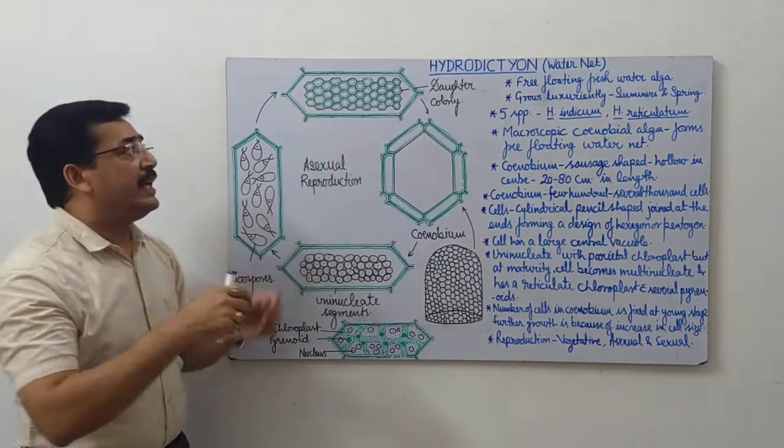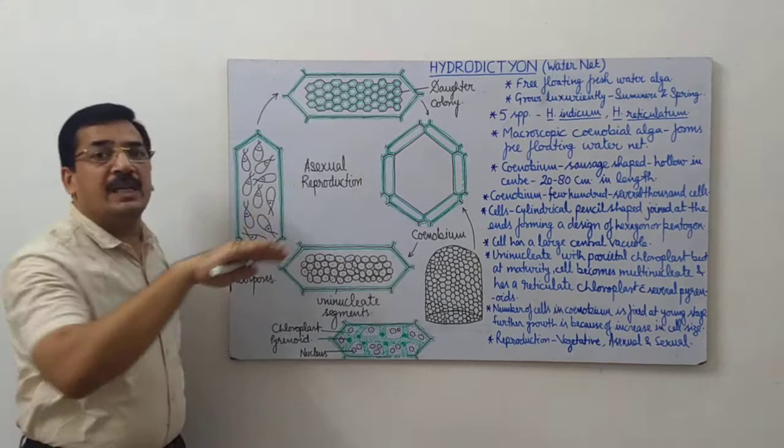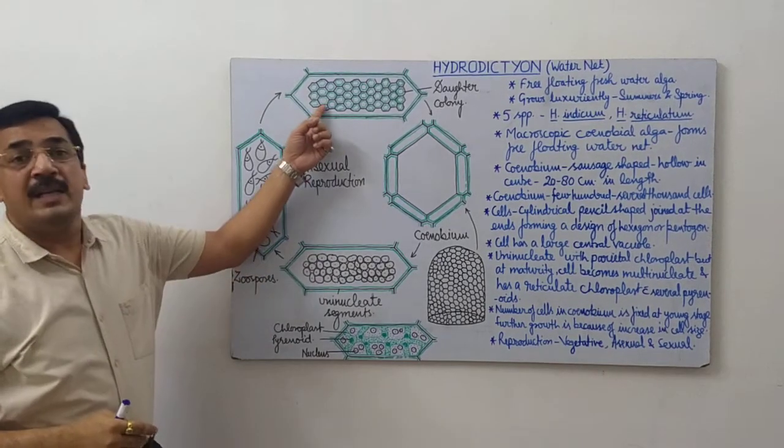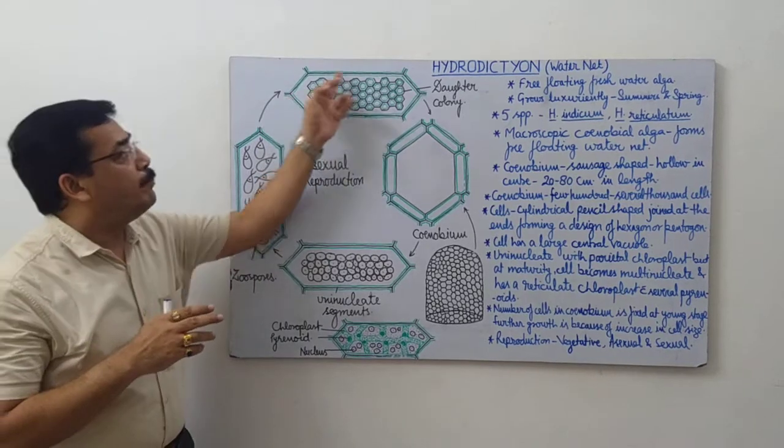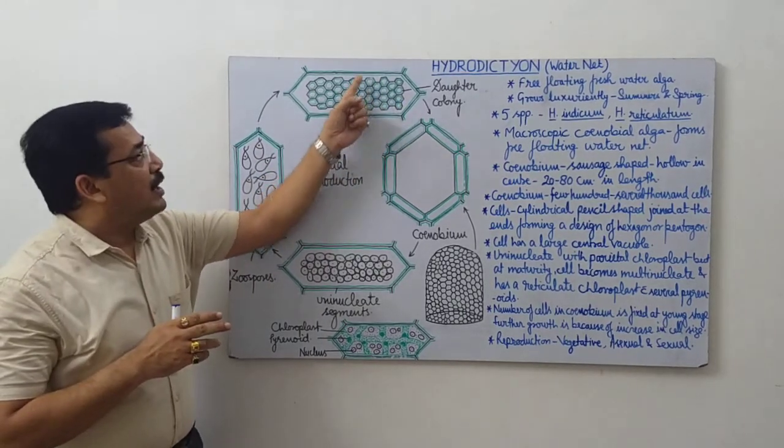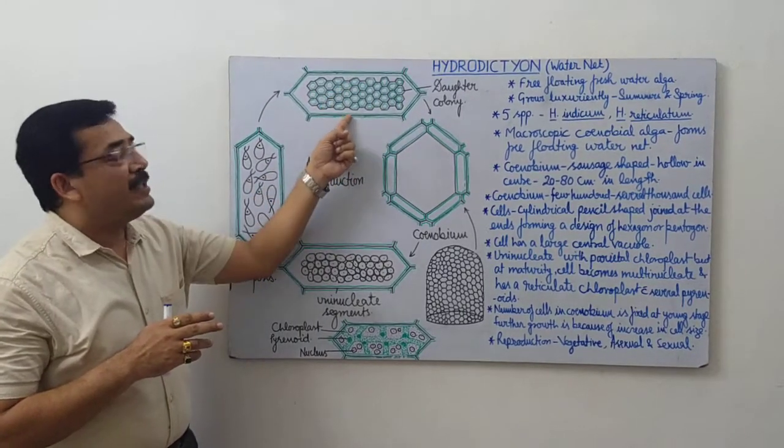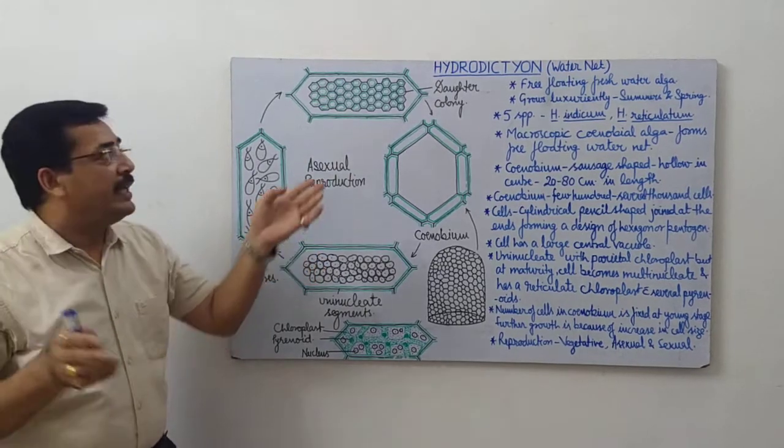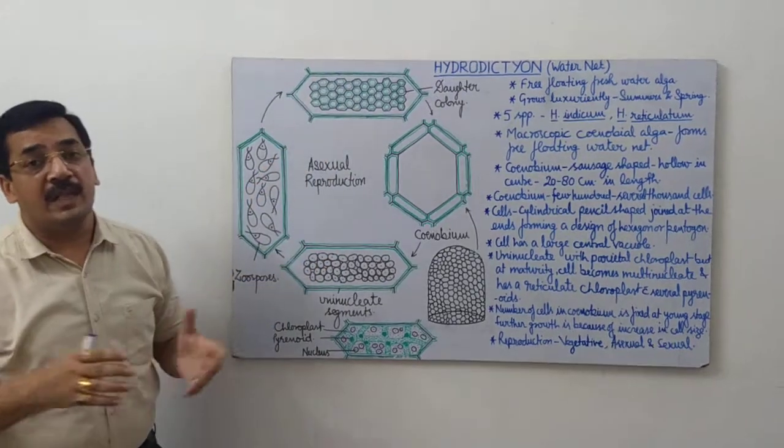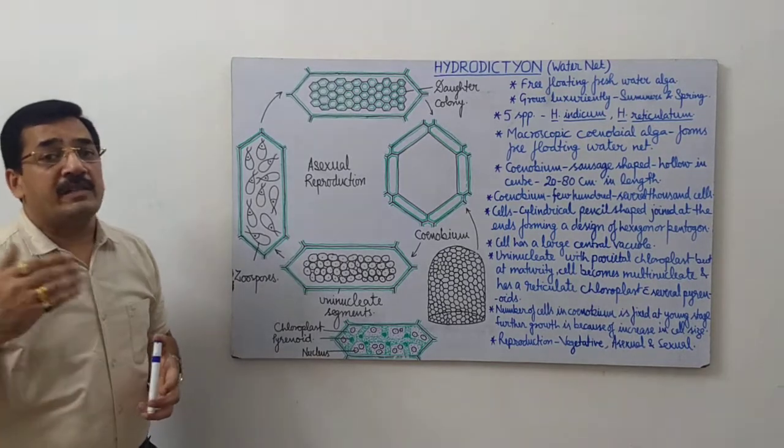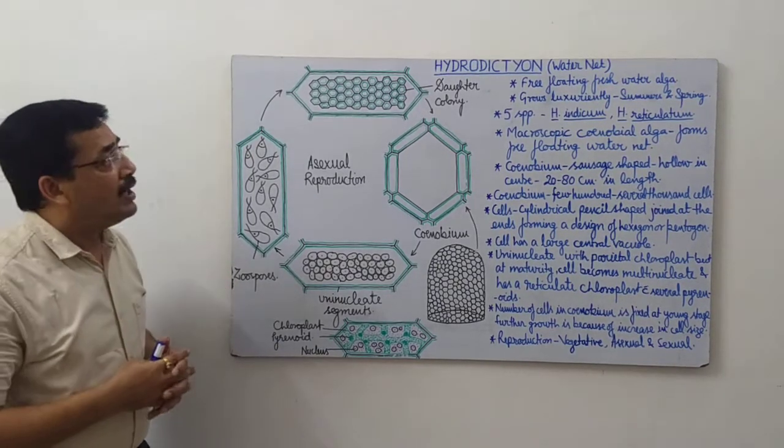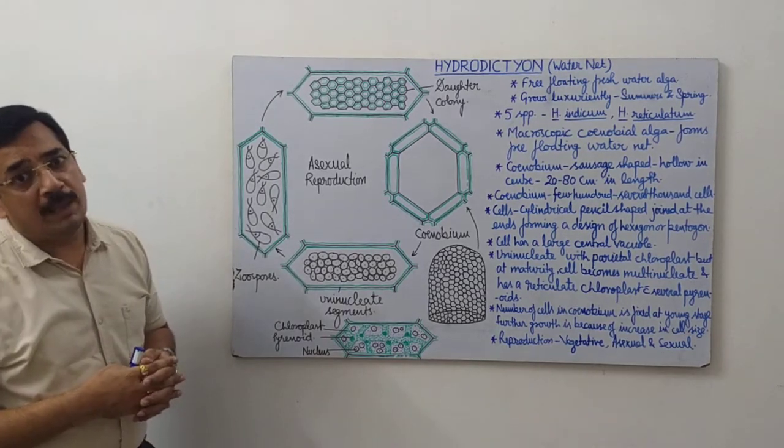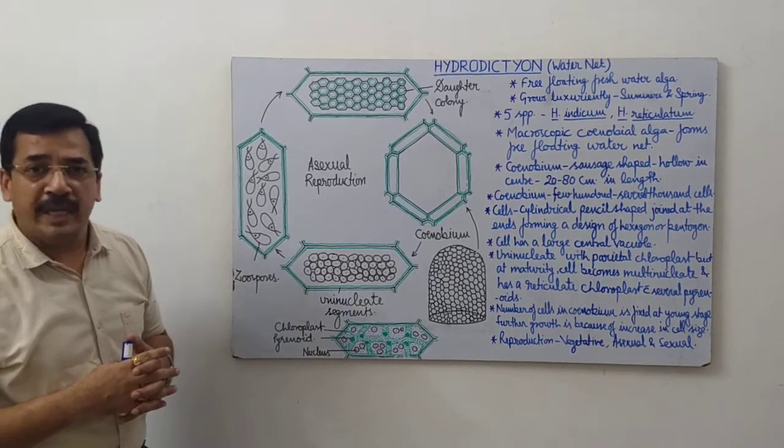We can say a new coenobium is formed inside the cell. When this arrangement completes, the original wall of the parent cell disintegrates and this new colony is released in the water and it starts to grow into a new thallus or new coenobium or a new colony. Thank you.